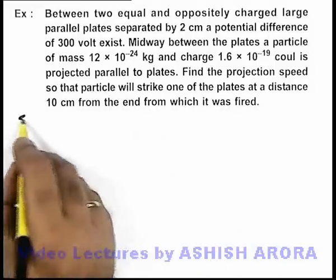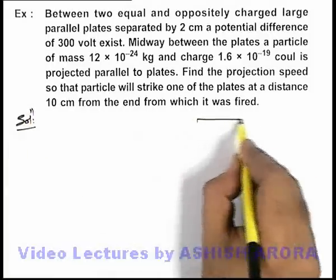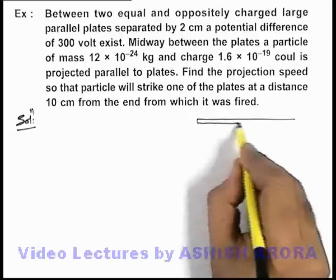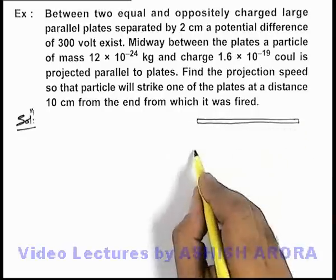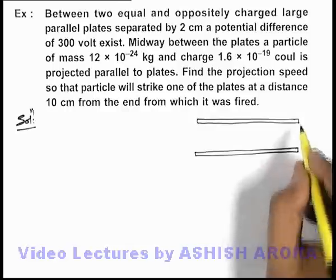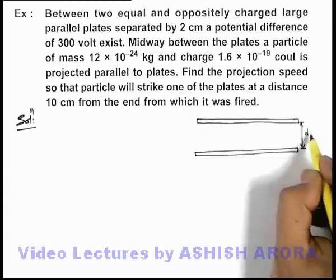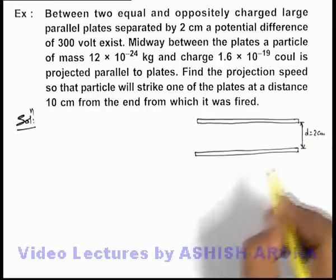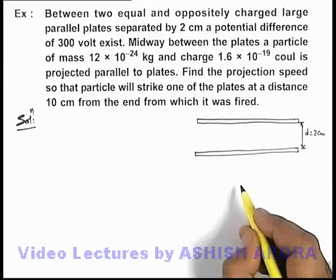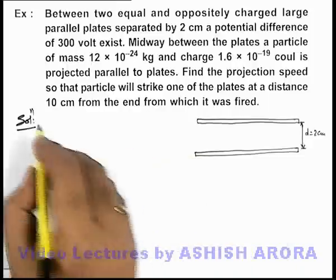Now if we draw the physical situation, we are given that there are two large parallel plates. Here I am drawing the two plates, which are separated by a distance d = 2 cm, and the potential difference between the two is 300 volts.